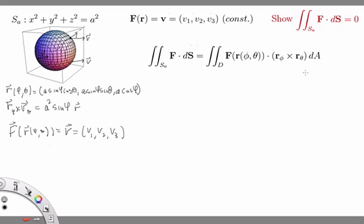So the way we do this, of course, D is the bounds of the parameterization, so the phi bounds are zero to pi and the theta bounds are zero to two pi. So we get zero to two pi, zero to pi, and then now we have to take the dot product of this vector with this vector.